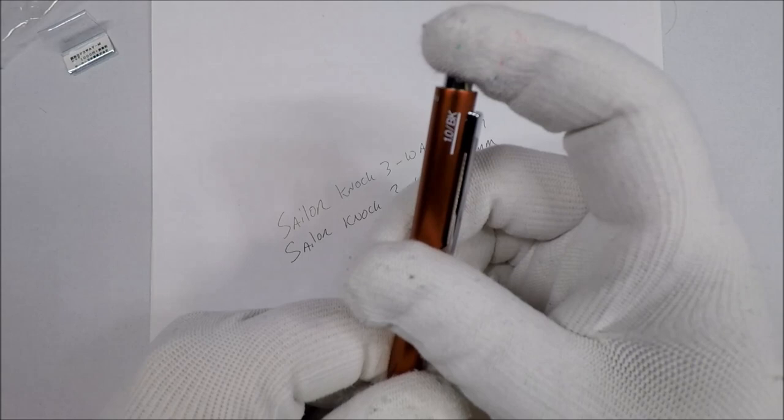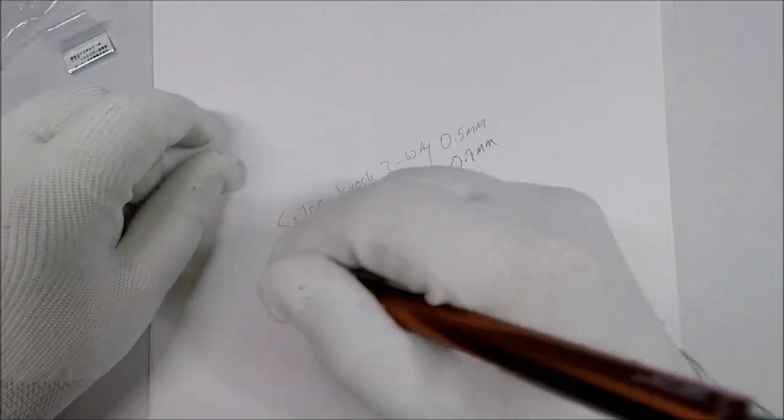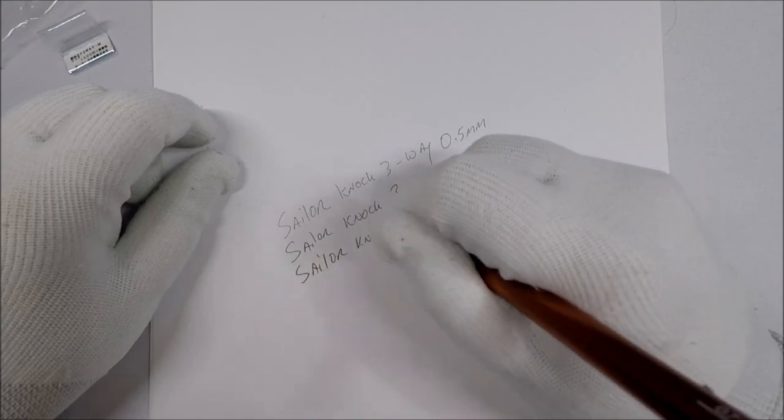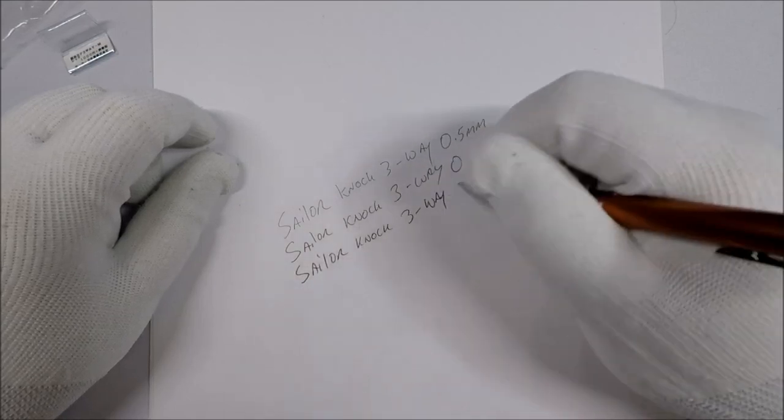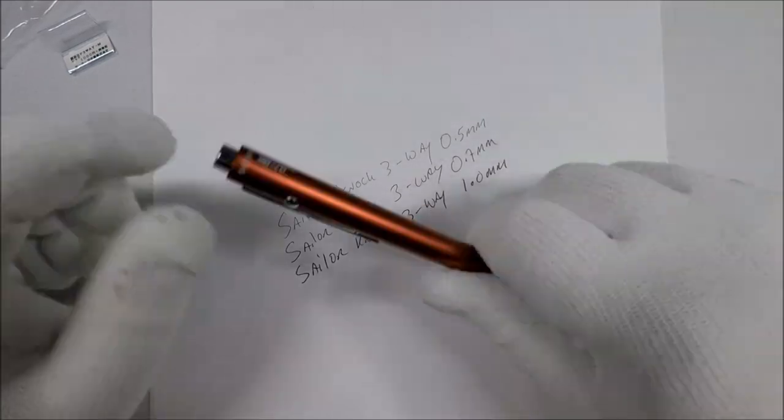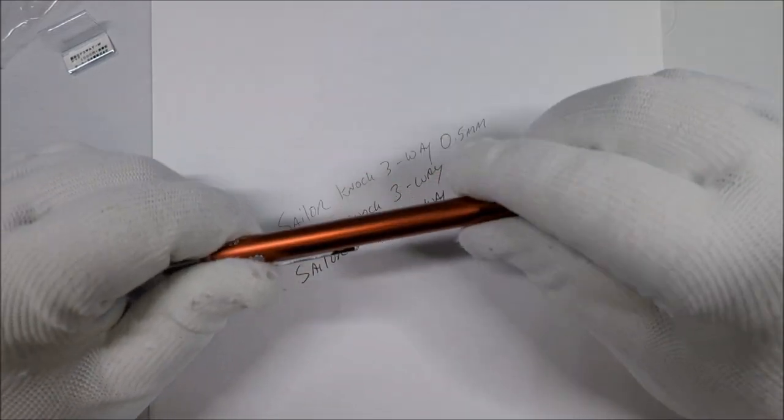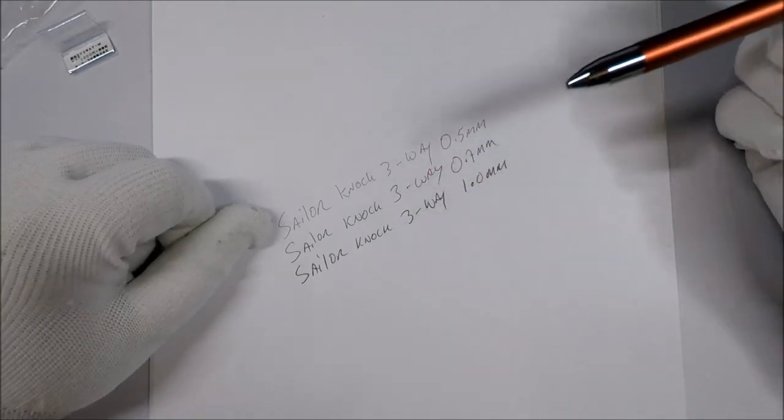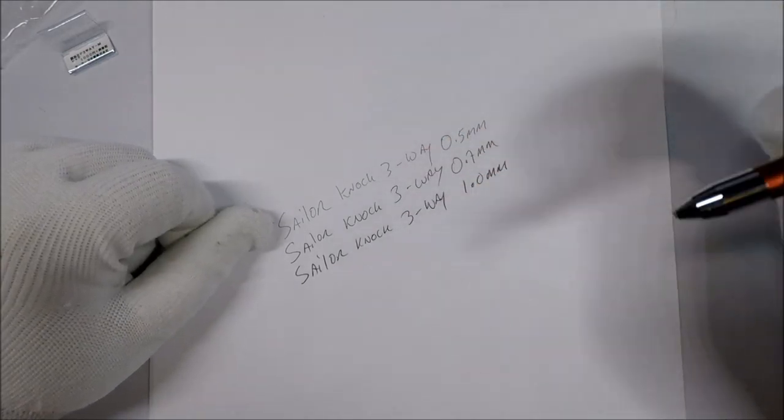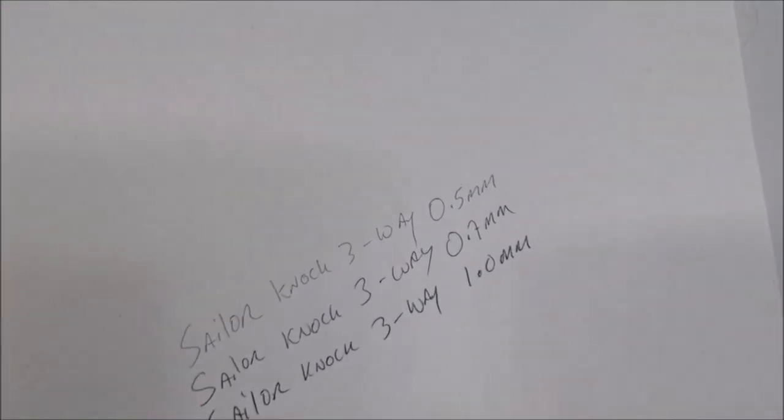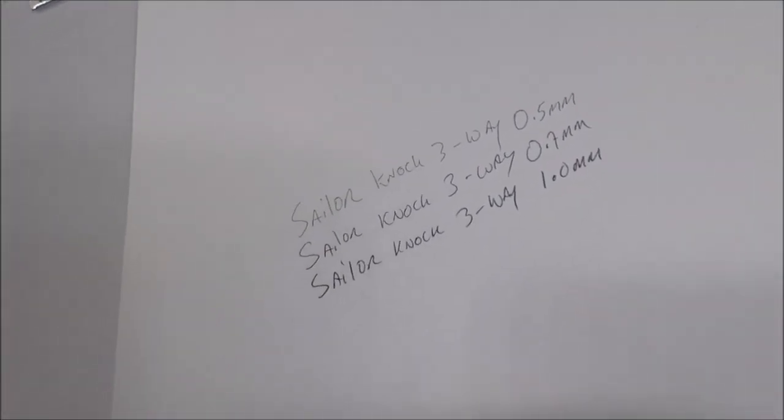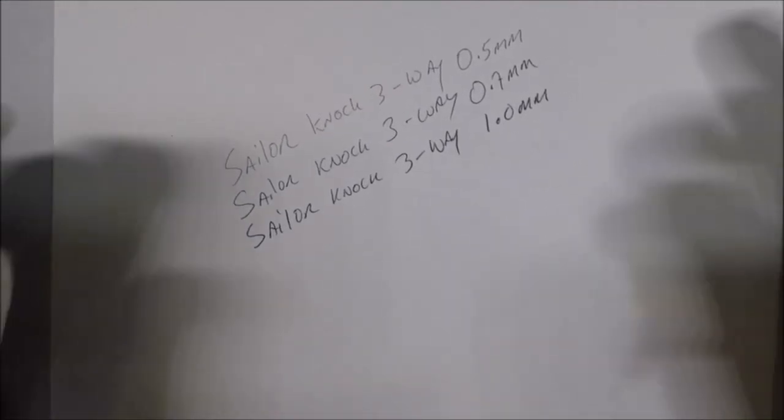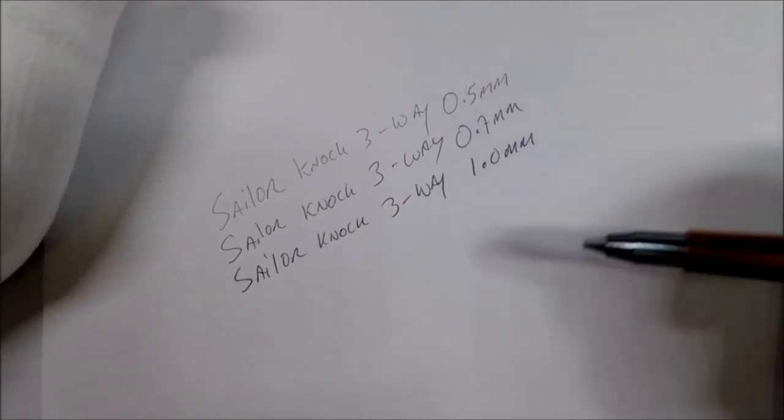So this is the 1.0mm. Sailor Knock three-way. And this is the 1.0mm. Alright. That's kind of interesting. I can tell you just from writing, I mean, you can see the difference in the thickness from writing with them in comparison. So you can definitely see the difference in the thicknesses.